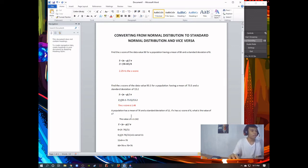A population has a mean of 76 and a standard deviation of 11. If x has a z score of 6, what is the value of x? In this time, we're going to find x and the value of x is 142 and how can I get that? Come on, follow my steps.